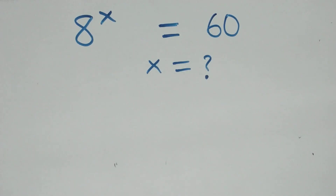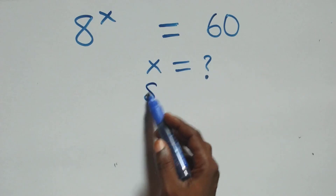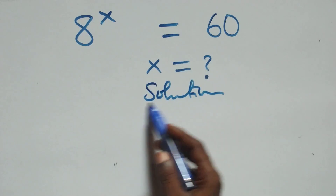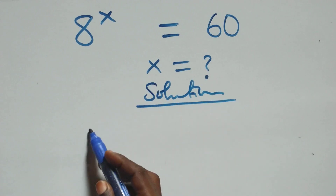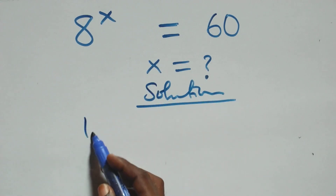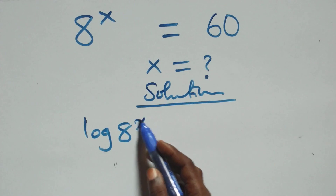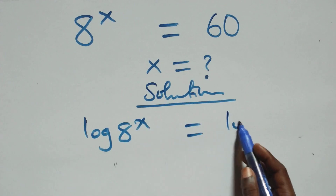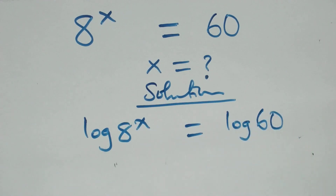Hello, you are welcome. We are going to solve this exponential equation. From what we have here, we take the log on both sides, that is we have log of 8 raised to power x equals to log 60.